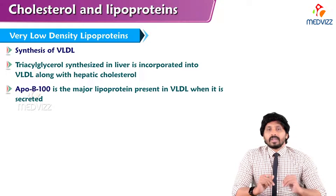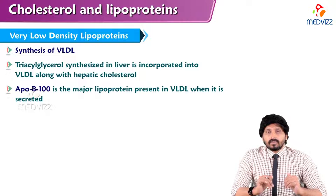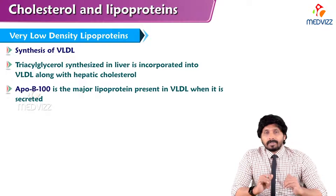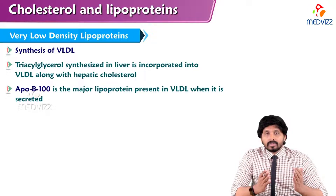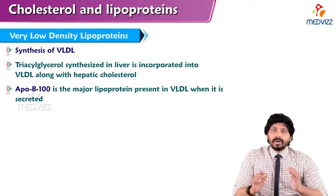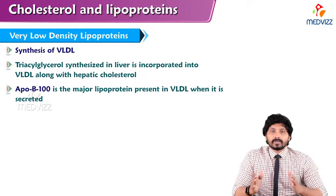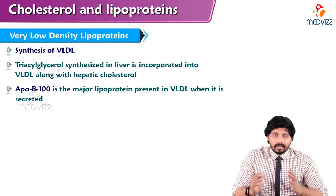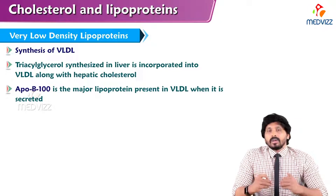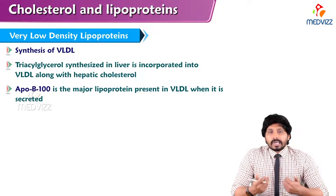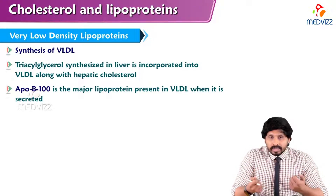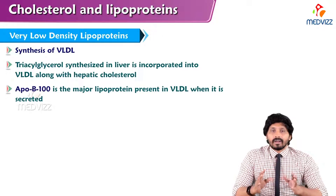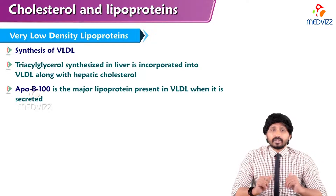Chylomicron is carrying the triglycerides from the intestine — that means exogenous triglycerides — from intestine to extrahepatic tissues, and from there it is reaching to the liver. But very low density lipoprotein is produced inside the liver, because triglycerides can be synthesized by the liver itself. They are known as endogenous triglycerides, and these endogenous triglycerides are supposed to be transported to extrahepatic tissues.